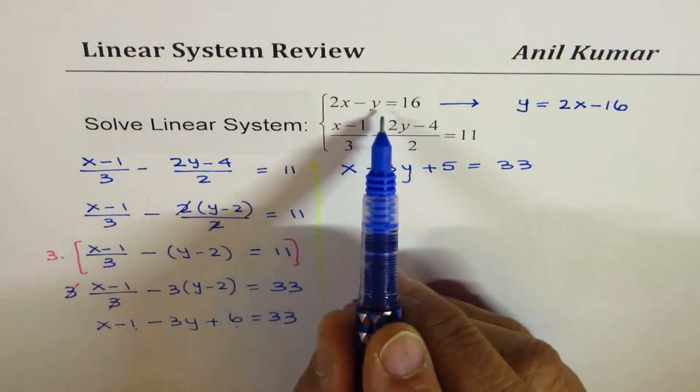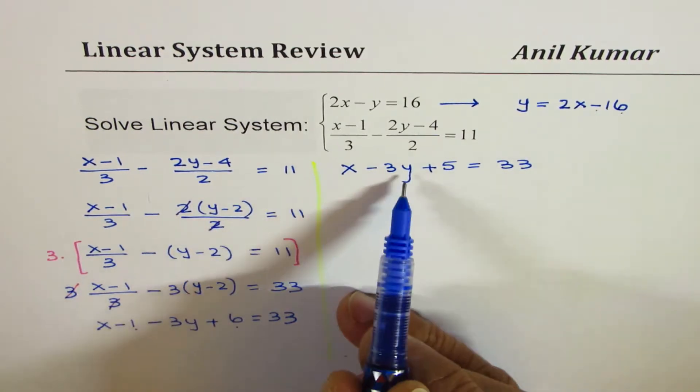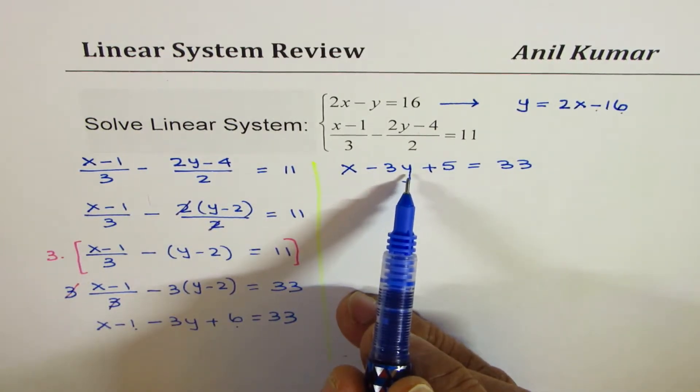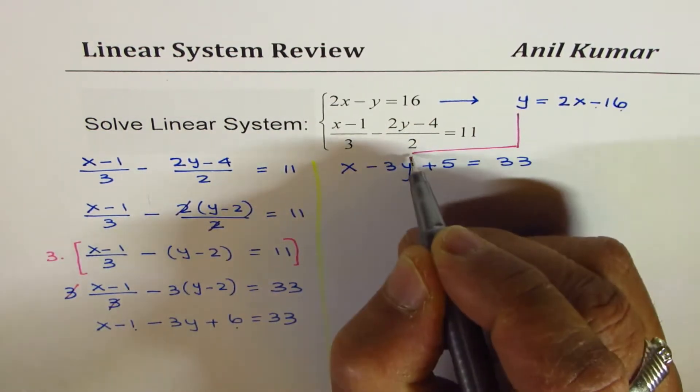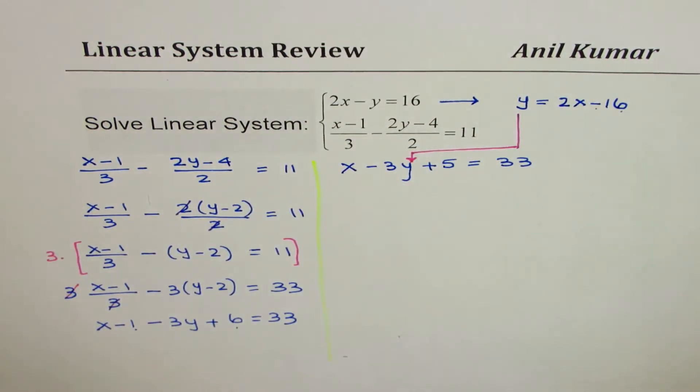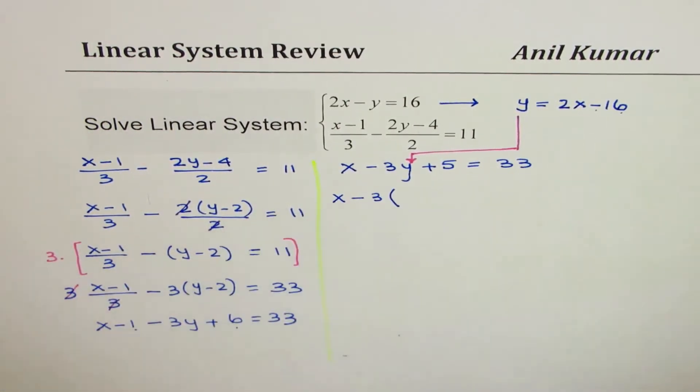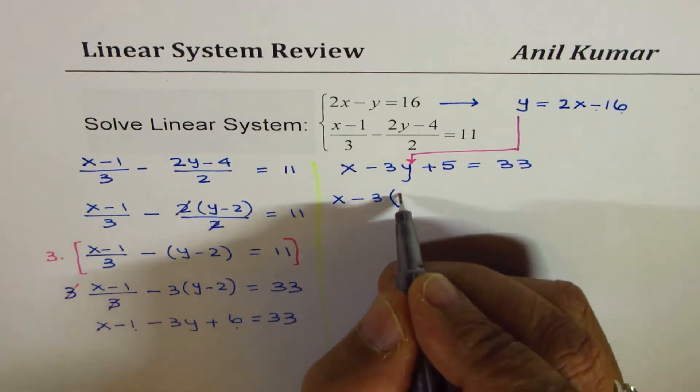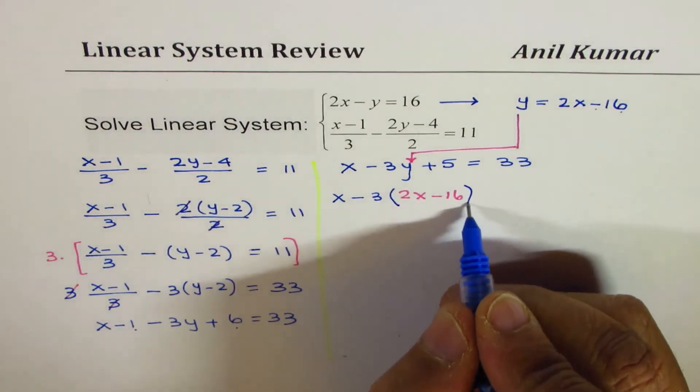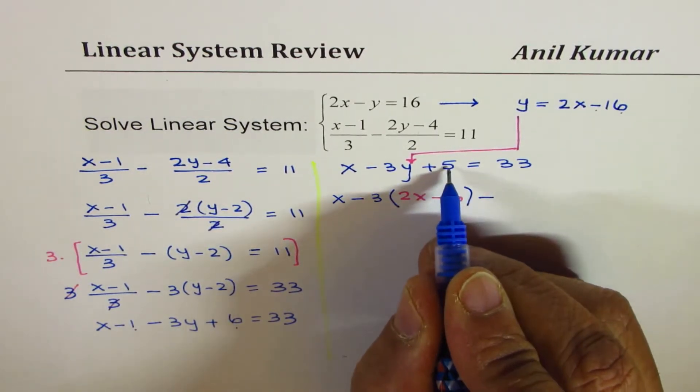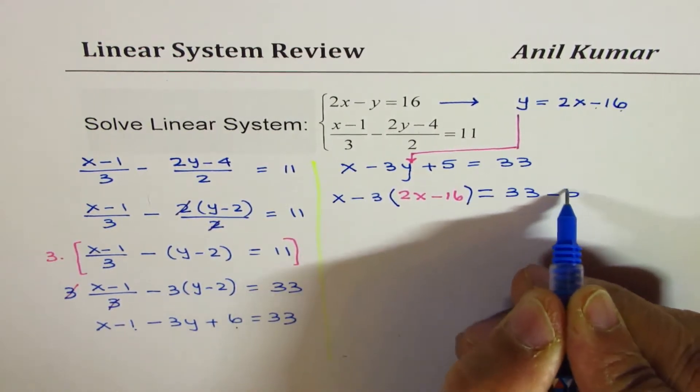Now we simplified equation number 1 as y equals 2x minus 16. Let us replace or substitute this value of y in the given equation. So what do we get? After the substitution, we get x minus 3 times, within brackets, 2x minus 16. So that's the substitution. Plus 5. I could take 5 on the other side, so we could write this as 33 minus 5.